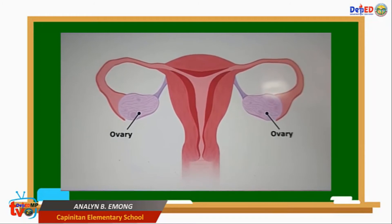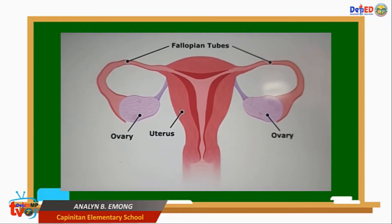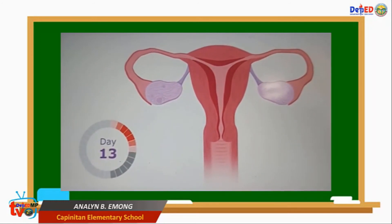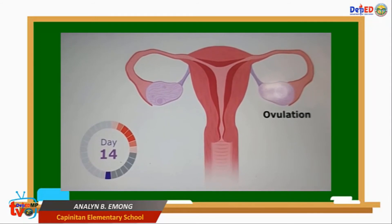Phase 2: The lining of the uterus becomes thin after menstruation. Days 6 to 13 is the repair period for the uterine lining and the development period for an egg to mature.